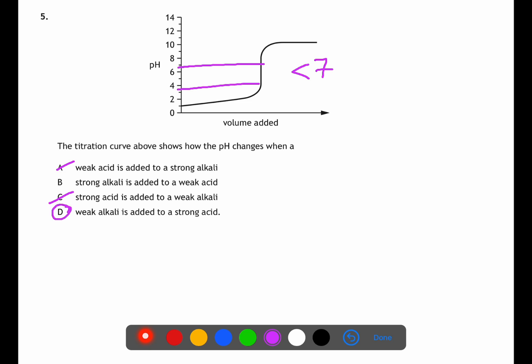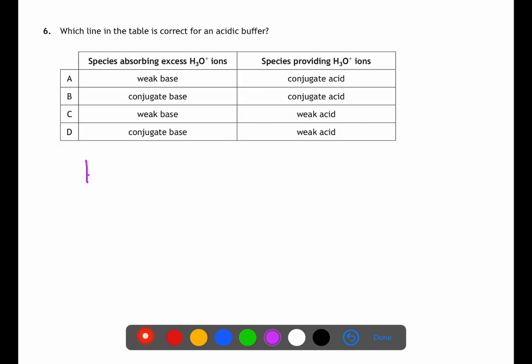Question six is looking at acidic buffers. It contains a weak acid HA which will partially dissociate into H+ and A- ions. It also contains a salt of the acid MA which will fully dissociate into M+ and A- ions. This gives a reservoir of the conjugate base A- which can be used to absorb the H3O+ ions. The species which will provide the H3O+ ions if required is the weak acid itself.